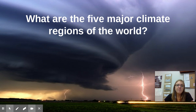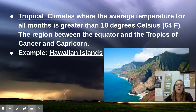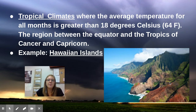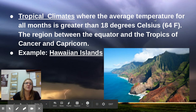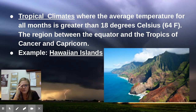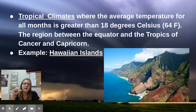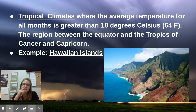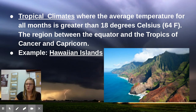There are five major climate regions of the world. First, we have the tropical climate area, where the average temperature for all months is greater than 64 degrees Fahrenheit — so it's very warm there pretty much all the time. This is located in the region between the equator and the Tropics of Cancer and Capricorn. For example, this includes the Hawaiian Islands — right in that middle section of the globe along the equator where it gets the hottest.